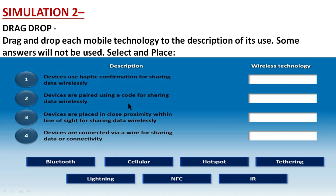Option 2 is: devices are paired using a code for sharing data wirelessly. Option 3 is: devices are placed in close proximity within line of sight for sharing data wirelessly. Option 4 is: devices are connected via wire for sharing data or connectivity. There are seven wireless technology options: Bluetooth, cellular, hotspot, tethering, Lightning, NFC, and IR. In the actual exam you have to drag the wireless technology into the correct section.